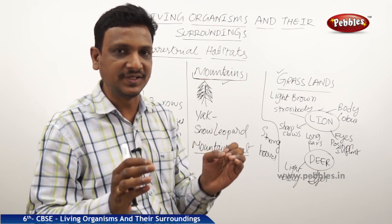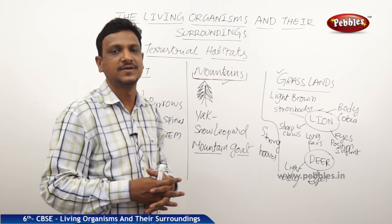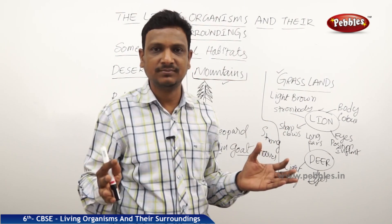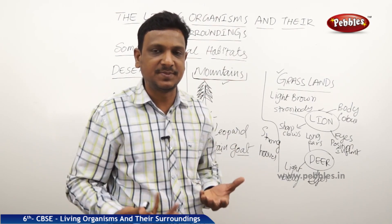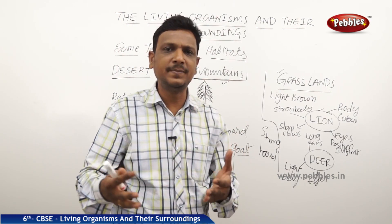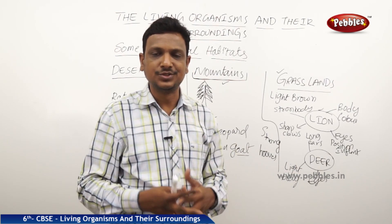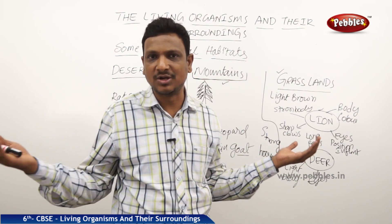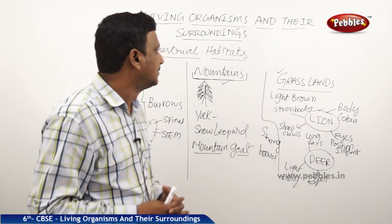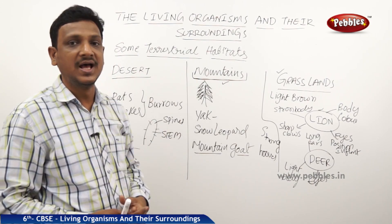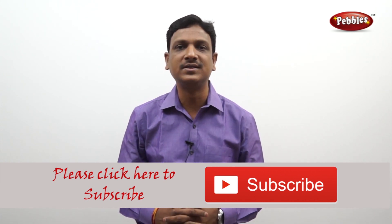All creatures have special features to adapt to live in a particular climate. We have seen terrestrial habitats with different animals having different features. Having a special feature to live in a particular habitat is called adaptation. Animals developed these special features over a very long period of time — not in one or two days. Organisms that could not develop special features became extinct, while those that could are still existing. After completing terrestrial habitats, let us move to aquatic habitats. If you like this video, please give a thumbs up and subscribe to our channel for more videos on the CBSE syllabus.